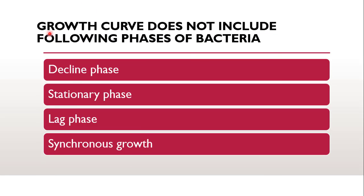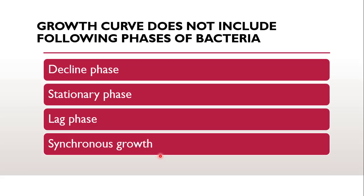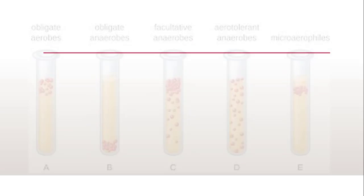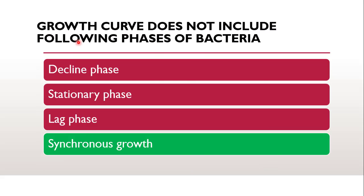Next question: the growth curve does not include which following phase — decline phase, stationary phase, lag phase, or synchronous growth? As we know, the growth curve has decline phase, stationary phase, and lag phase, but it does not include synchronous growth. So the correct answer is synchronous growth — the phase not included in the growth curve is synchronous growth.